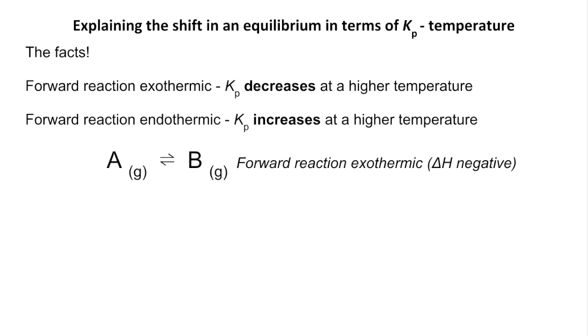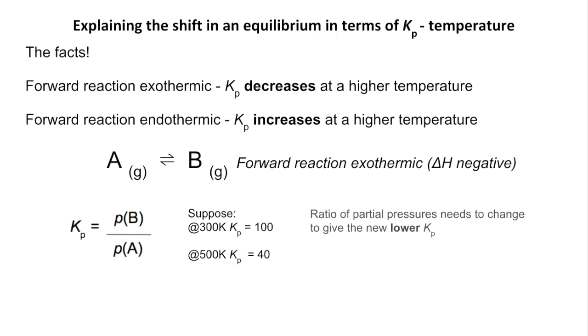So we're just going to use this generic gaseous equilibrium, A in equilibrium with B, and we're saying that the forward reaction is exothermic, so its delta H would be negative. The Kp expression would obviously look like that. So let's suppose at 300 Kelvin, Kp had a value of 100. 500 Kelvin, it's gone down to 40. So if you think about it, the ratio of the partial pressures needs to change to give the new lower Kp value, because this ratio here at 300 gave us 100 for Kp. So at the new temperature, this ratio, if it doesn't change, it's not going to give us 40. So how does it need to change? The denominator term needs to increase and bring down Kp to that new value.